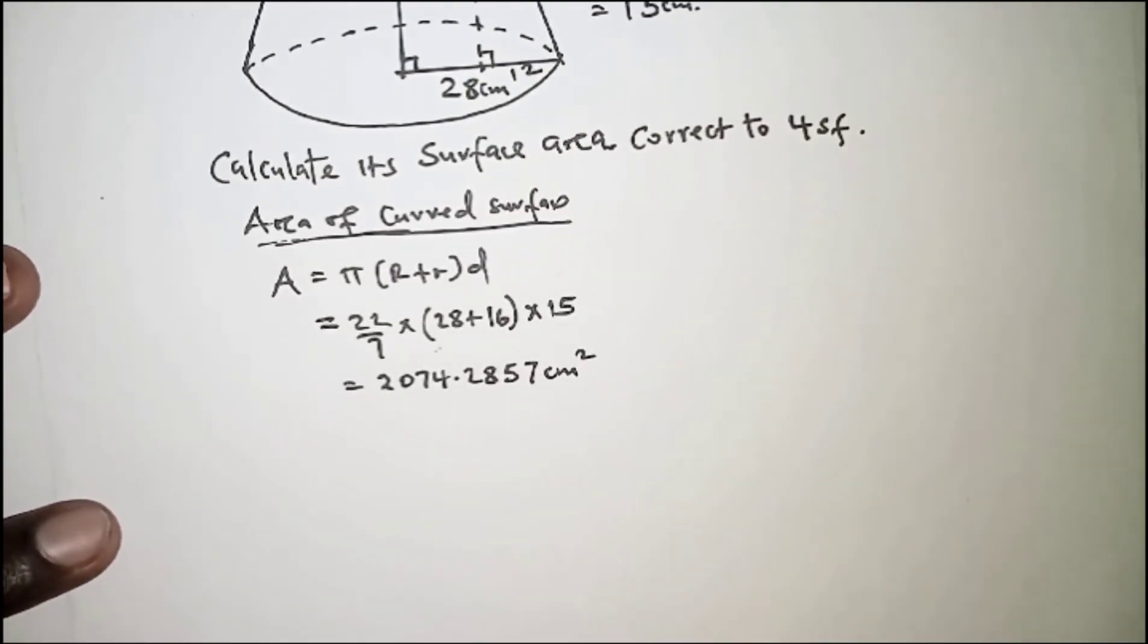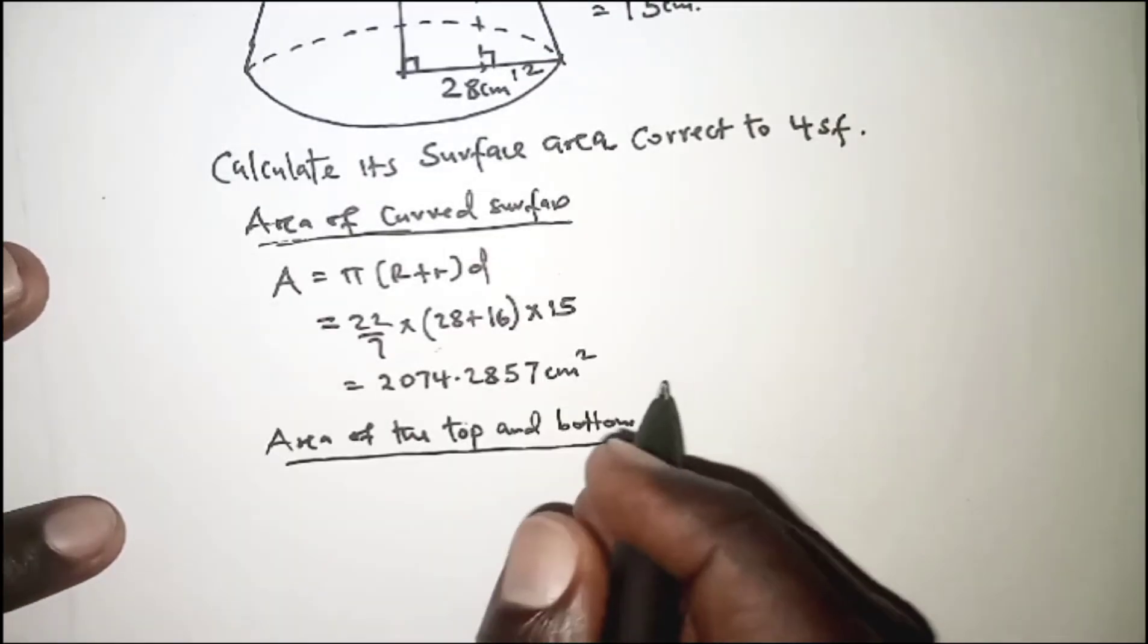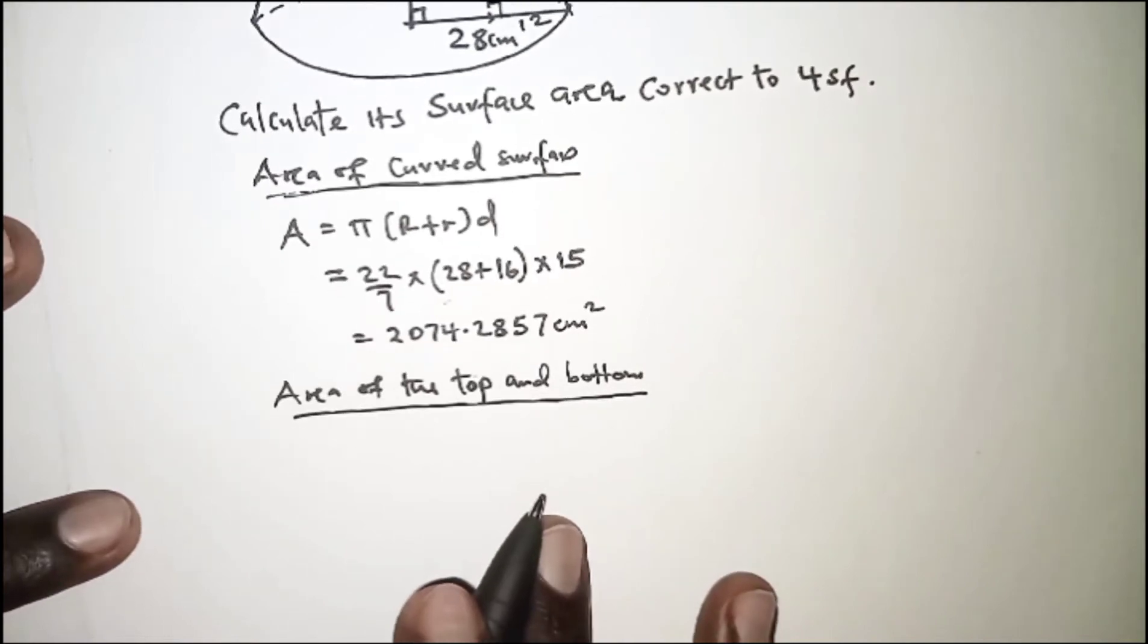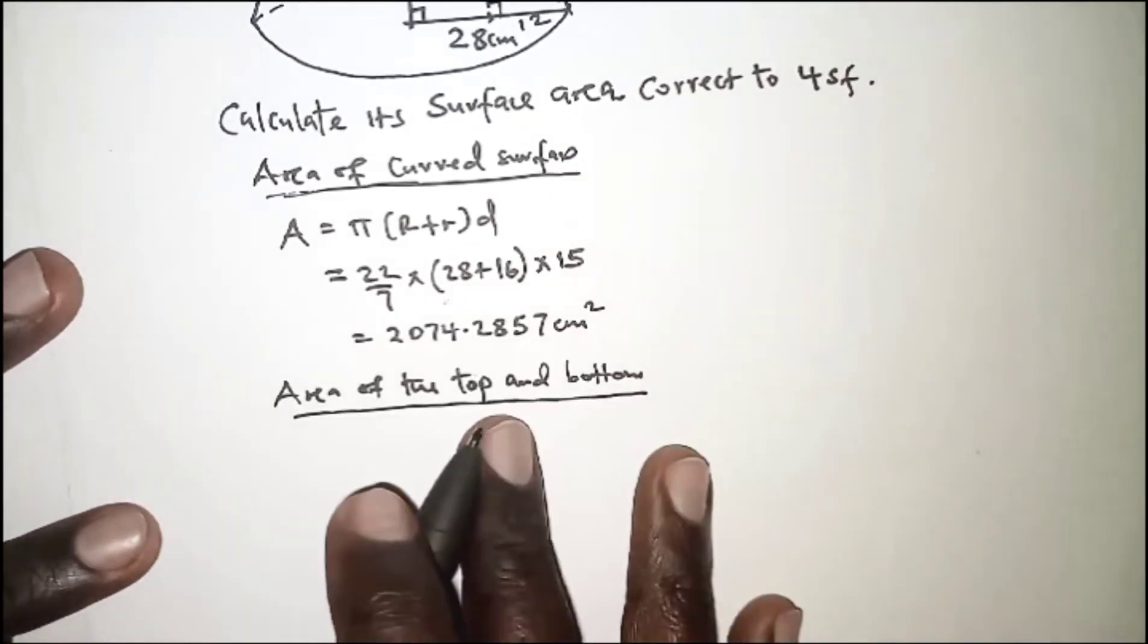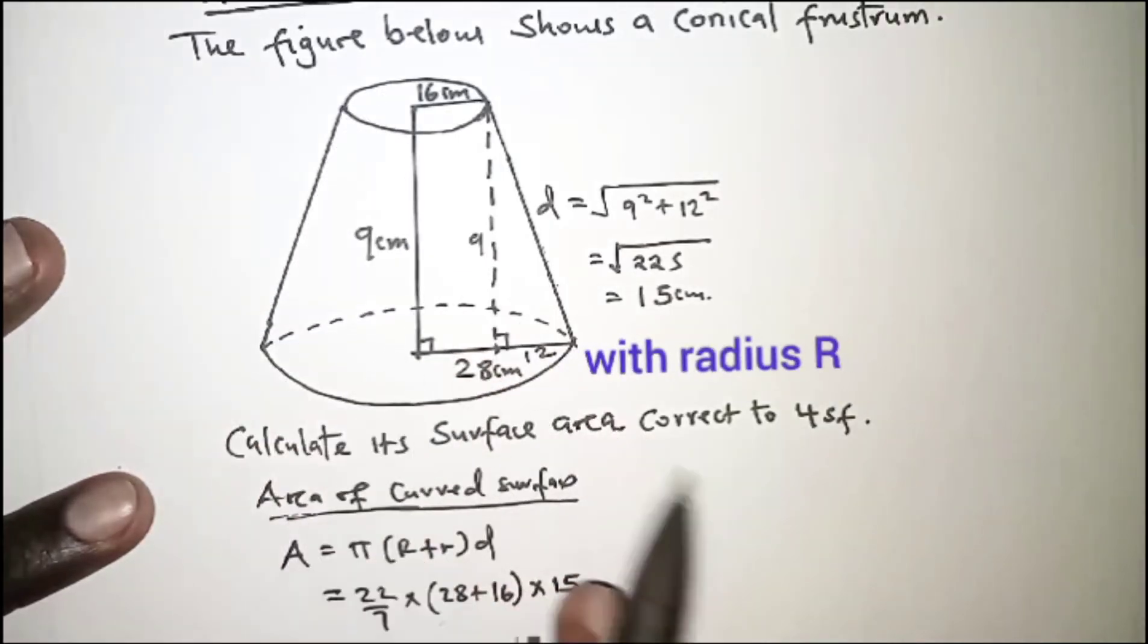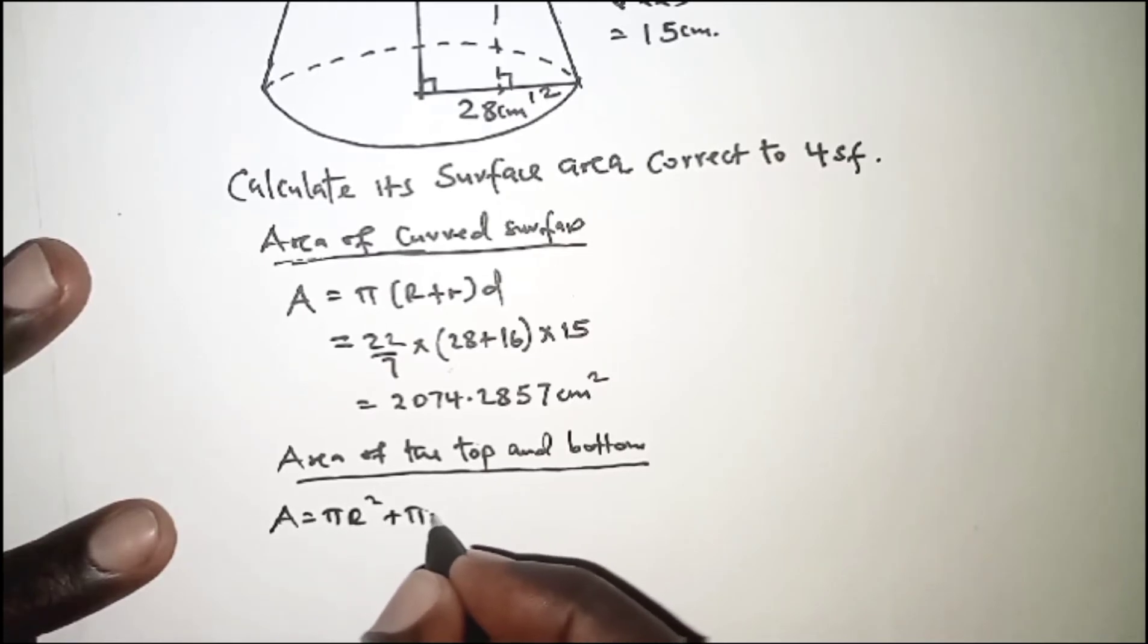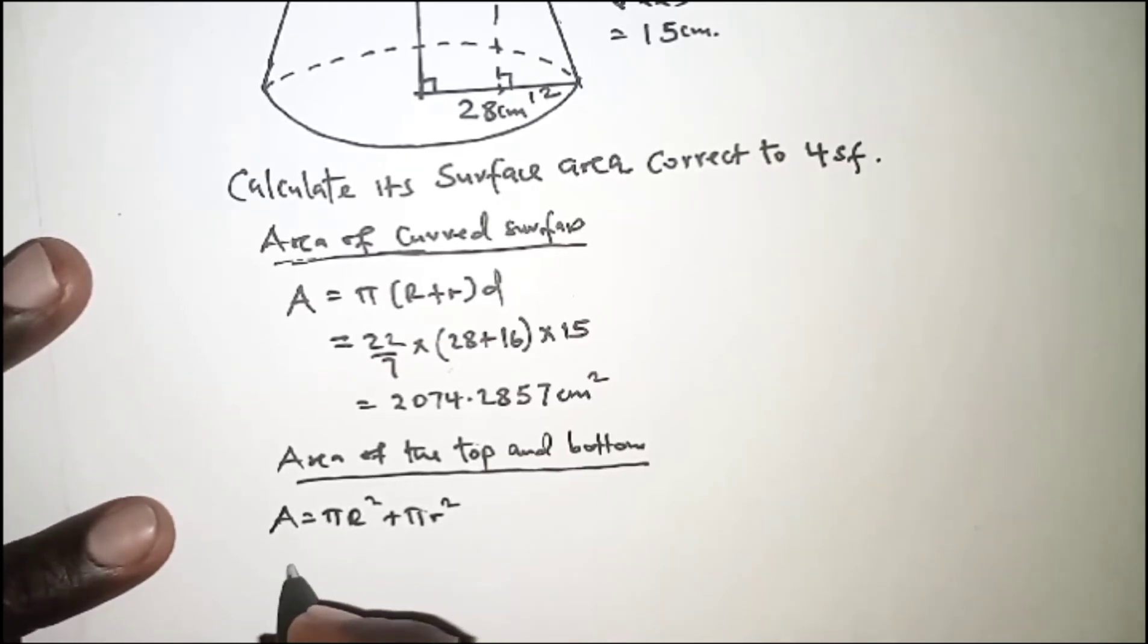Next we will look for the area of the top and bottom. To get the area of the top and bottom, the top is circular, the bottom is circular. So it is equal to πr² plus πr², which just implies that the area is equal to π(r² + r²).